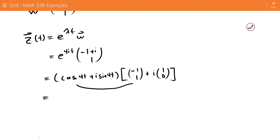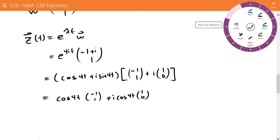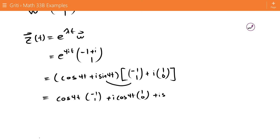We multiply this cosine 4t by the first vector, so we get cosine 4t times negative 1, 1. Multiply the cosine 4t by the second vector to get i cosine 4t, 1, 0. Then we multiply i sine 4t by the first vector, and we multiply i sine 4t by the second vector to get i squared, which is negative 1, times sine 4t, 1, 0.